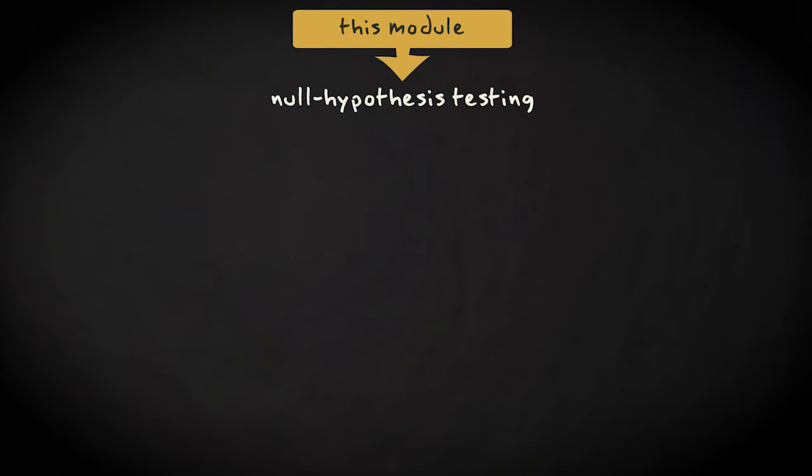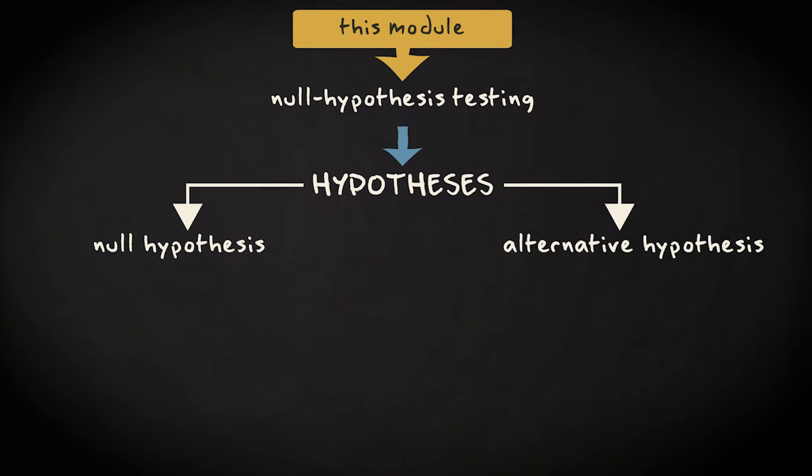In this module, we look at null hypothesis testing, where each significance test is based on two hypotheses, the null hypothesis and the alternative hypothesis.